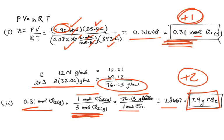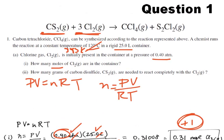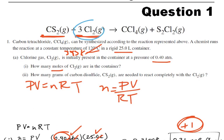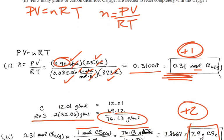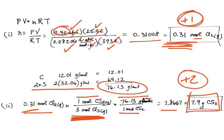A lot of students across the nation forgot this one-to-three ratio. When they saw the equation, they just went for it and forgot the ratio. If they left that off, they lost one point. So if you just took 0.31 and multiplied by the molar mass, you could get one of the two points.